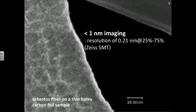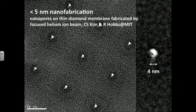Helium ion microscopy has shown unique capability of nanoscale imaging and nanoscale fabrication. This is one extreme example of nanoscale imaging, giving a resolution of 0.21 nanometers, which has never been shown before from other microscopy. And this is another example of nanofabrication capability: sub-5 nanometer patterning. We could fabricate nanopores with less than 5 nanometer diameter on a thin membrane diamond.